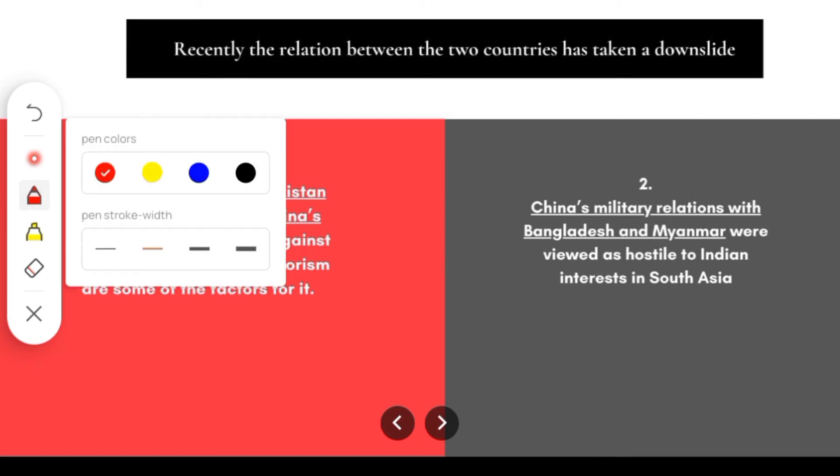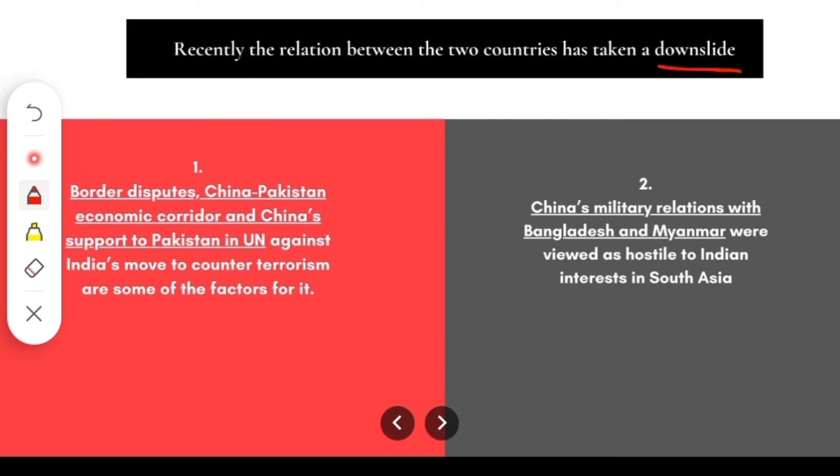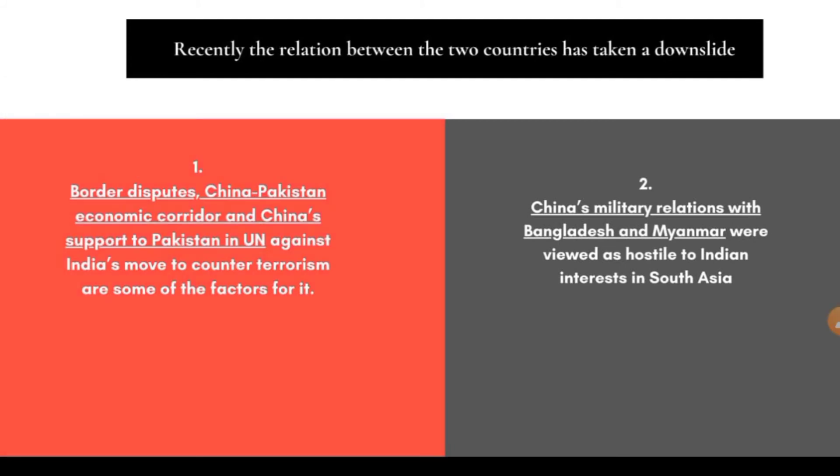In recent times, if we look, our relations have gone on a downslide. In 2021 we have seen that in Ladakh, tensions between India and China have risen again. There are also many indirect policies that impact India — for example, China's support for Pakistan. So there are still many areas where we have to work to maintain a good relationship between India and China.